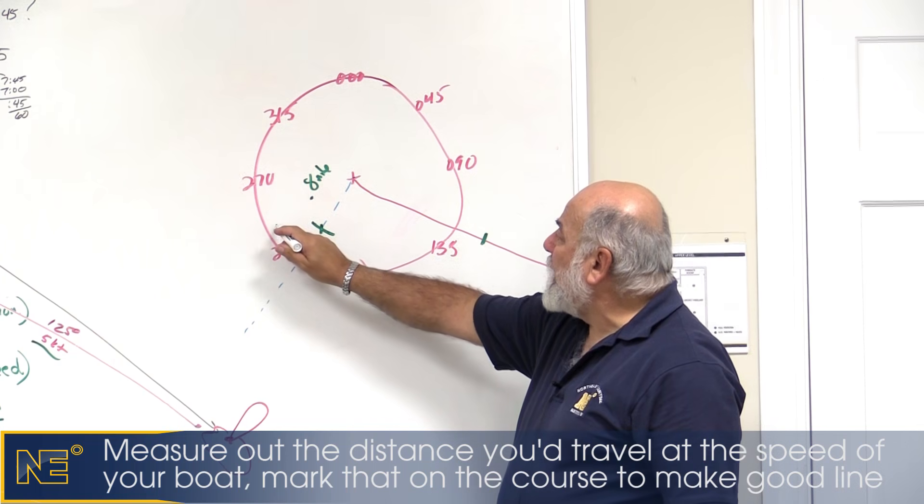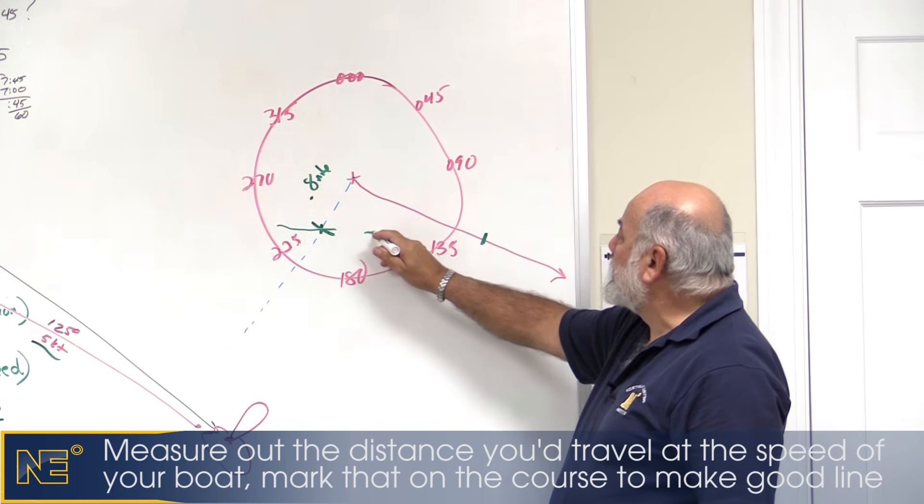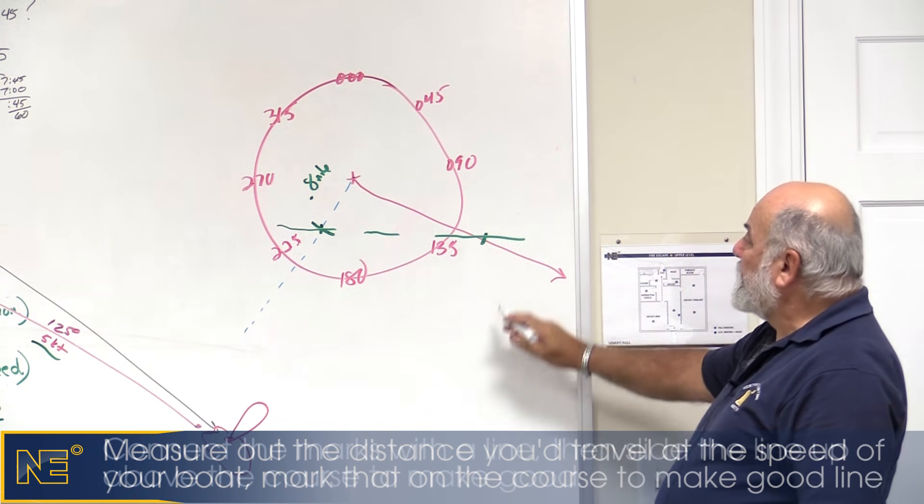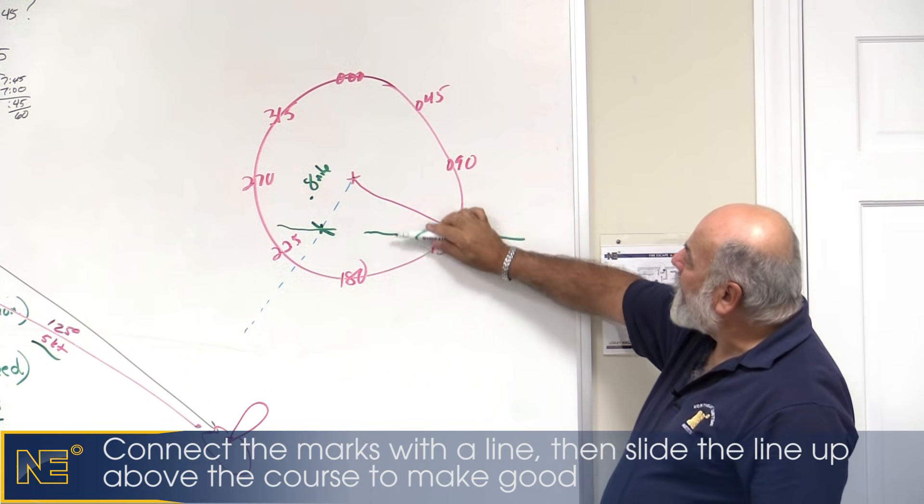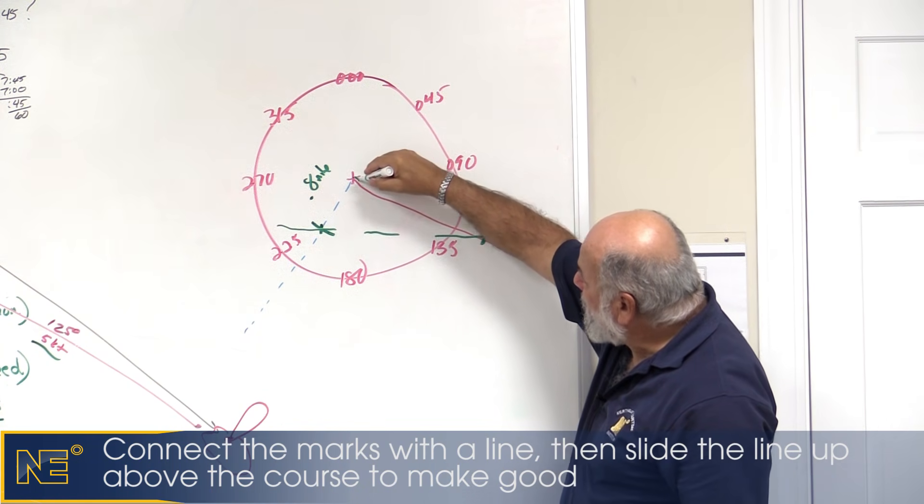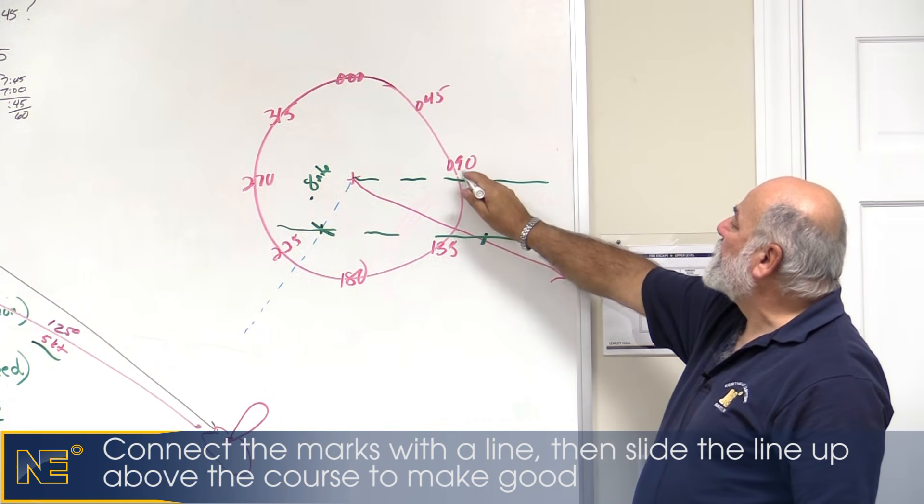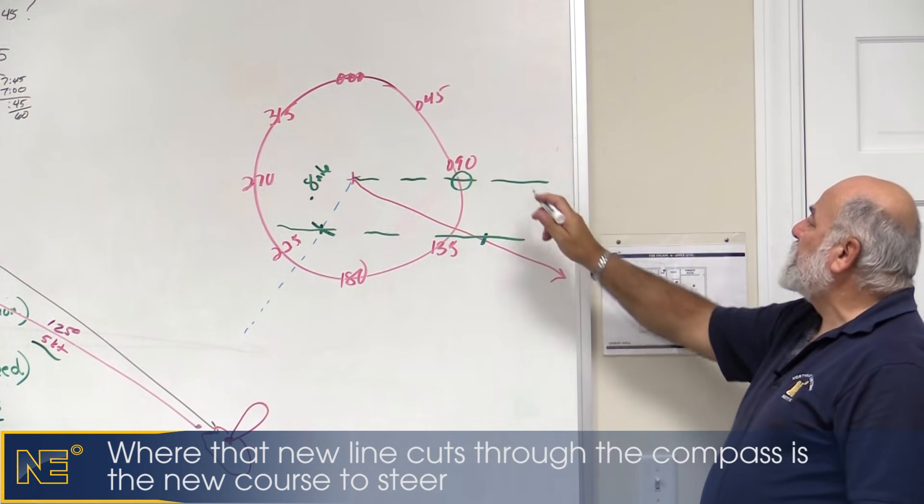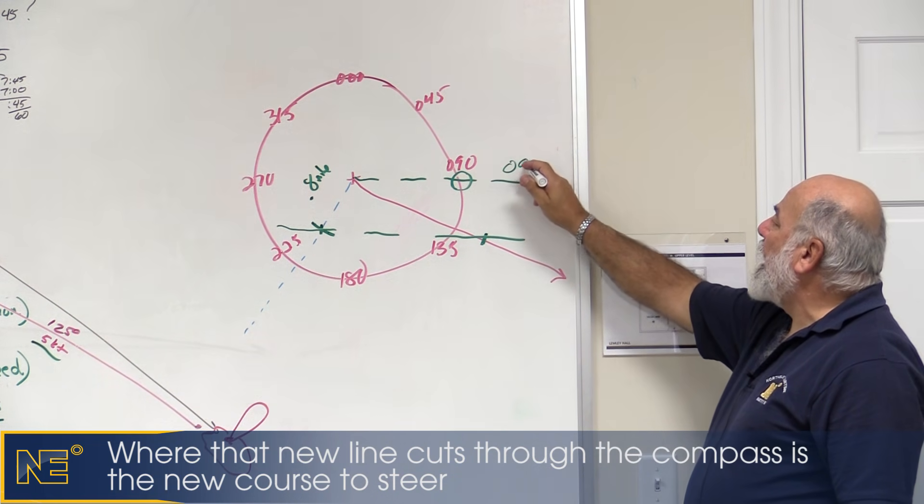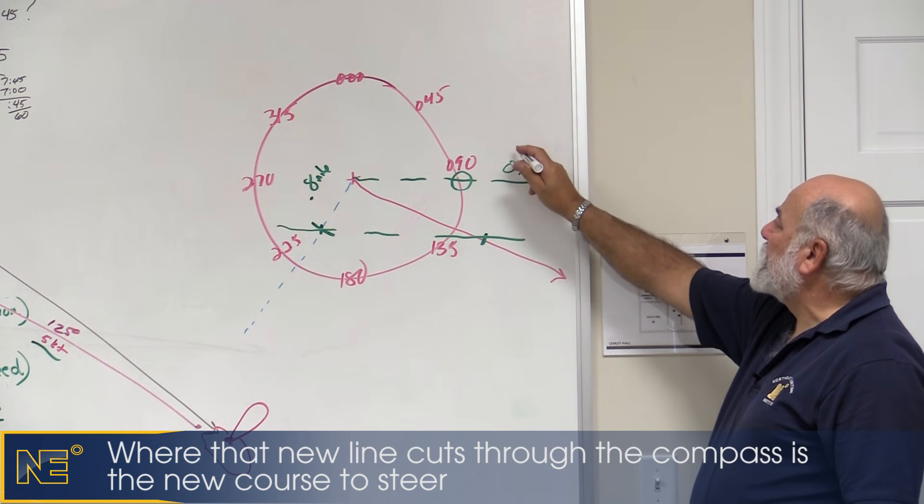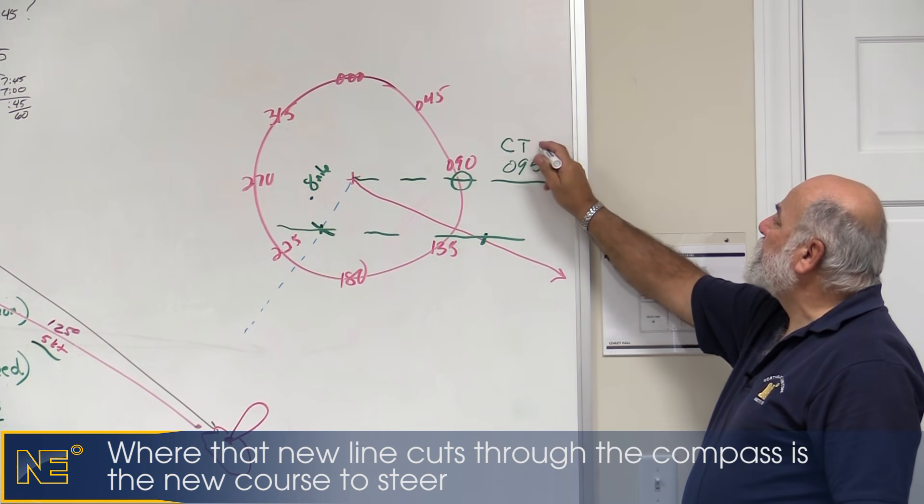I take now, and I connect these lines, and then I take that and run it up through the compass rose parallel to the lines that I just drew, and where that comes through and touches the compass rose is the course that I would steer, 095 for the sake of discussion, would be my course to steer.